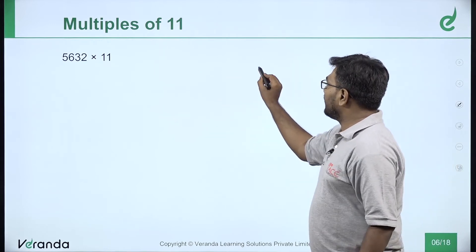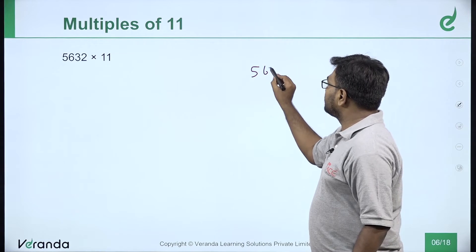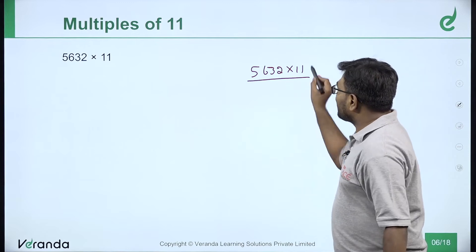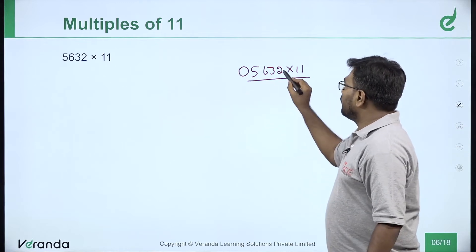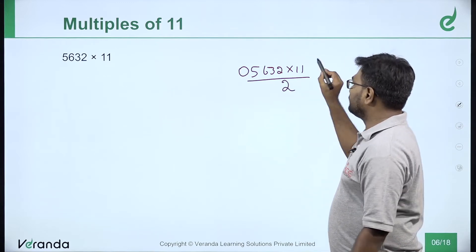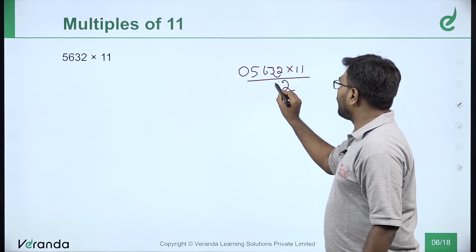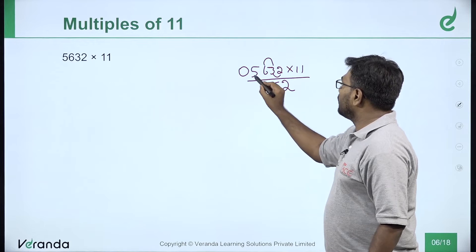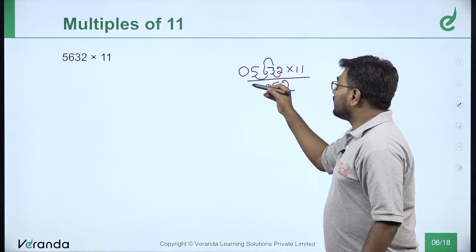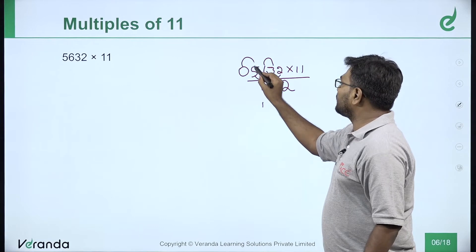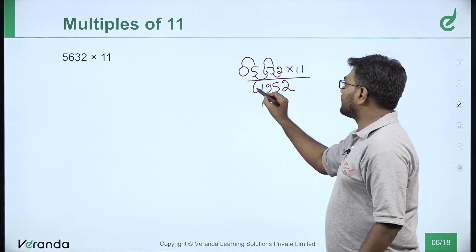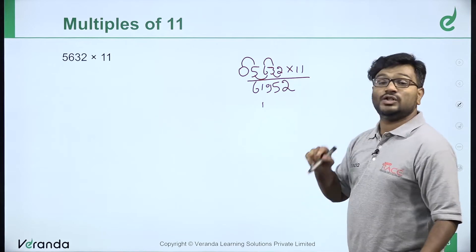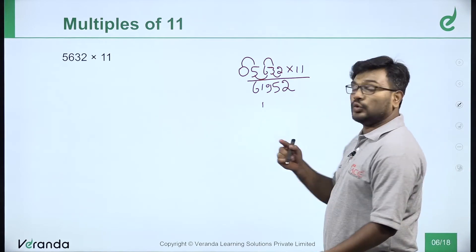This example: 5632 into 11. Add a 0. First number stays the same. Then 3 plus 2 is 5. Then 6 plus 3 is 9. Then 5 plus 6 is 11 — write 1, carry 1. Then 0 plus 5 is 5, plus 1 is 6. Answer: 5632 into 11 is 61952. This is your answer.